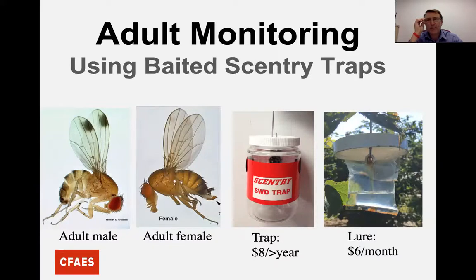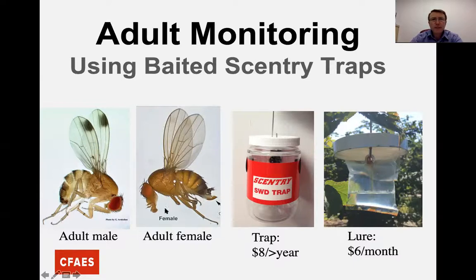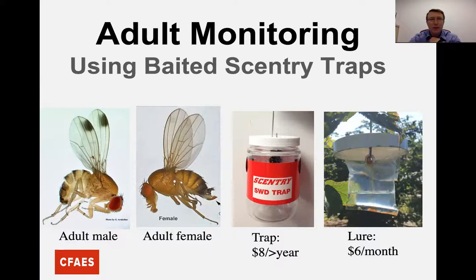Thanks, Celeste — that was good grounding in where it's been nationally and locally. This picture shows the male spotted wing drosophila on the left — it has the spots on its wings, that's where the name comes from. The female on the right doesn't have spots but has a really big ovipositor. The tough part of this monitoring is distinguishing males and females — in real life they're only a few millimeters in size, so we need stereoscopes to confirm identification.